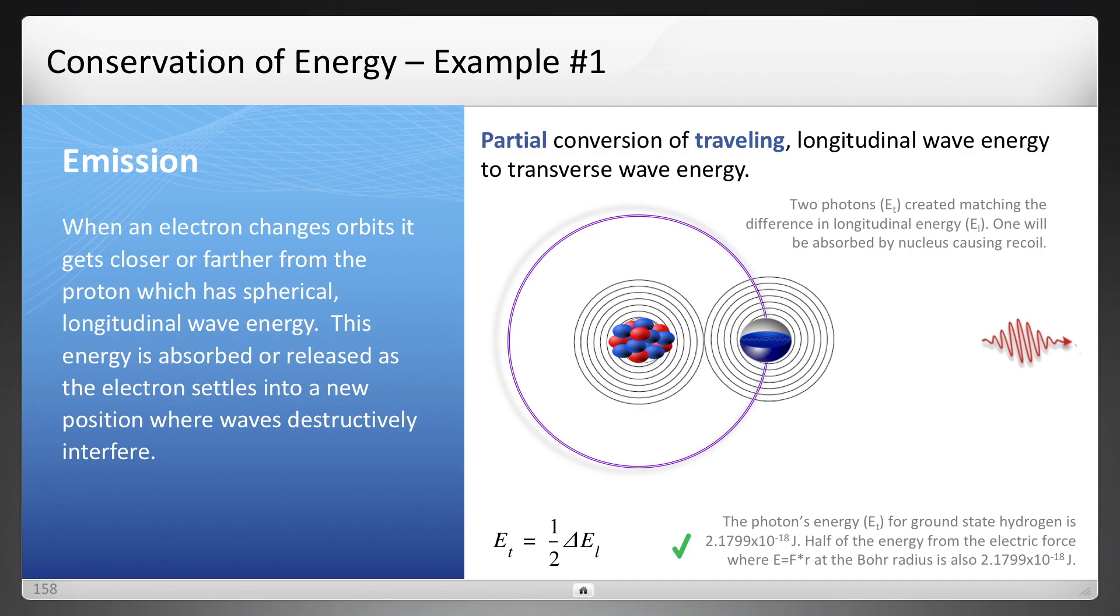Now if you were to use the electric force, for example use Coulomb's law to calculate a force, and energy is force times distance, so you have to multiply it by the Bohr radius. If you take half of that, you will find that's exactly equal to that photon energy.